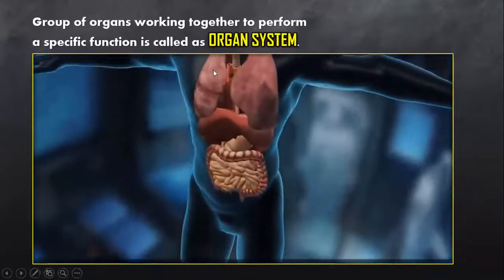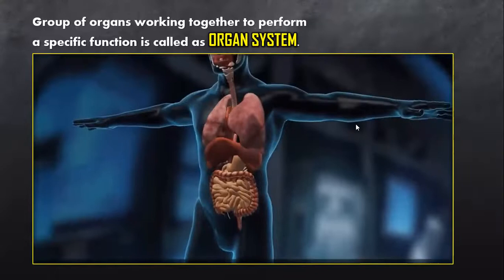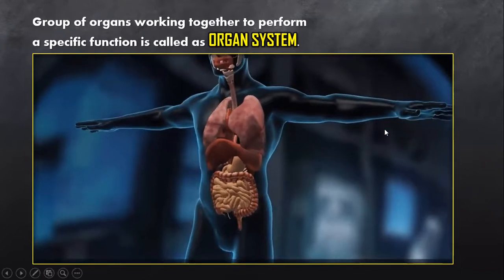A group of organs working together to perform a specific function is called an organ system. Whenever a specific function has to go in unison with other functions of the body, that type of system is called an organ system.